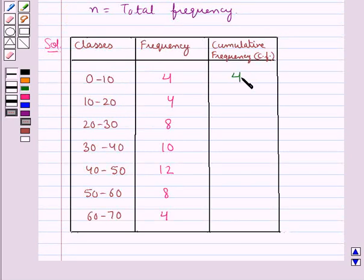Now, the cumulative frequency for the class 10 to 20 is obtained by adding the frequency of class 0 to 10, which is 4, and class 10 to 20, which is 4. So that becomes 8.